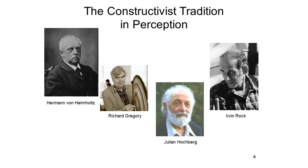The constructivist tradition is probably the oldest tradition in the study of perception. In fact, Gibson's ecological view was presented as a radical alternative to this traditional constructivist view. Usually in this course we're going to overturn traditional views of things, but in this case the constructivist tradition seems to have the right idea about perception. As far as scientific psychology is concerned, the constructivist tradition begins with Hermann von Helmholtz, a 19th century physiological psychologist who argued that perception requires the perceiver to make unconscious inferences about the object and its properties.